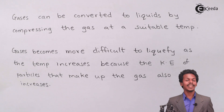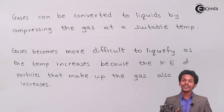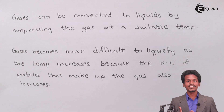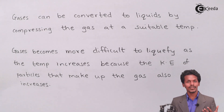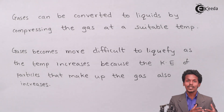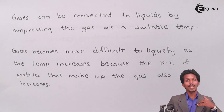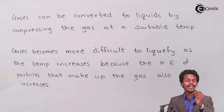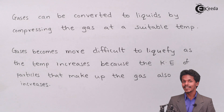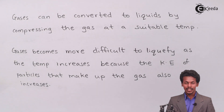To convert a particular gas into liquid, we need to maintain a sufficiently low temperature. The temperature below which a gas can be liquefied and above which it cannot be liquefied is basically known as critical temperature.